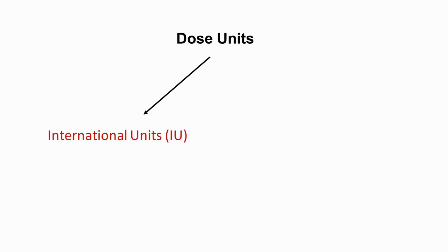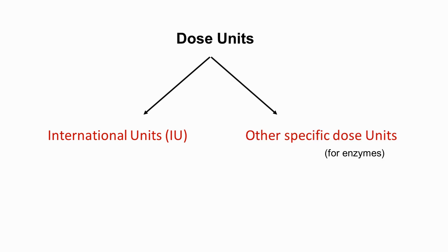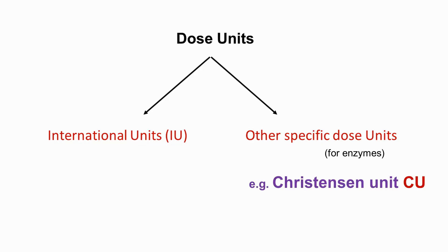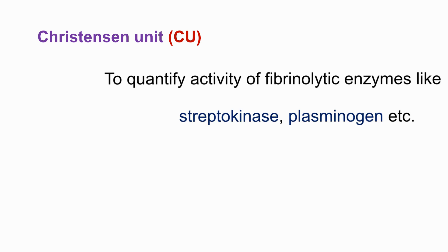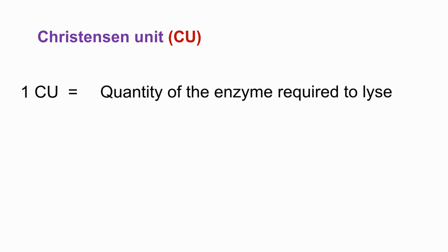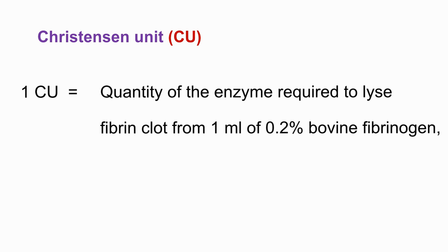Apart from international units, there are dose units specific to certain categories of compounds like enzymes. The activity of enzymes is quantified in terms of their ability to catalyze certain reactions. For example, the Christensen unit (CU) is used to quantify the activity of fibrinolytics like streptokinase and plasminogen. One CU of a fibrinolytic enzyme is the quantity of enzyme required to lyse the fibrin clot from 1 ml of 0.2% bovine fibrinogen in 30 minutes.